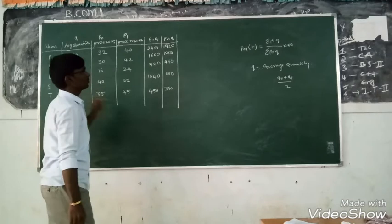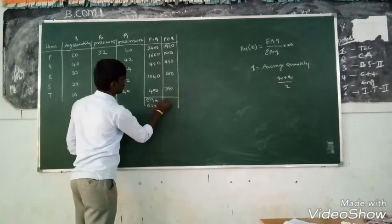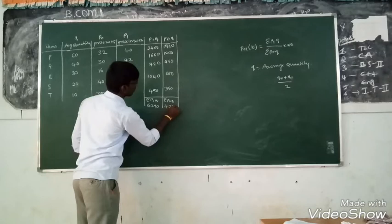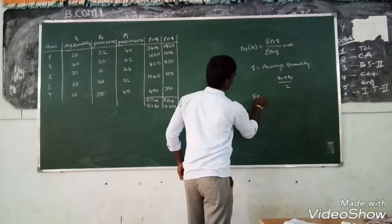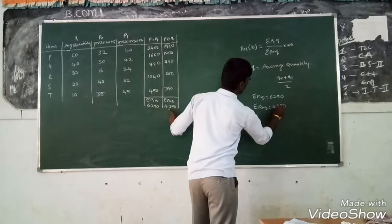What is the total sum of the P1 into Q? 6290. Summation of P0 Q is 4750. Therefore, summation of P1 Q equal to 6290, summation of P0 Q equal to 4750.